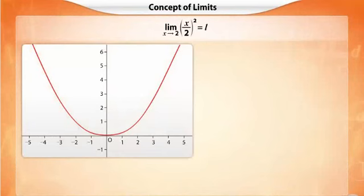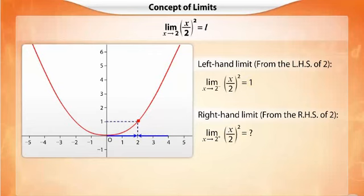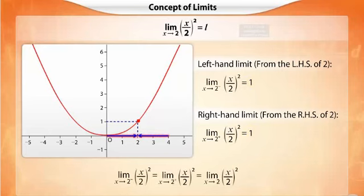Let us now evaluate some limits. Consider the function shown. Here, we need to find the limit of the function as X approaches 2. On approaching 2 from the left-hand side, we see that the height of the graph approaches 1, giving us the left-hand limit as 1. When we approach 2 from the right-hand side, we again see that the height of the graph approaches 1, giving us the right-hand limit as 1. Since the left-hand limit and the right-hand limit are equal, we say that the limit exists and takes the value of 1.